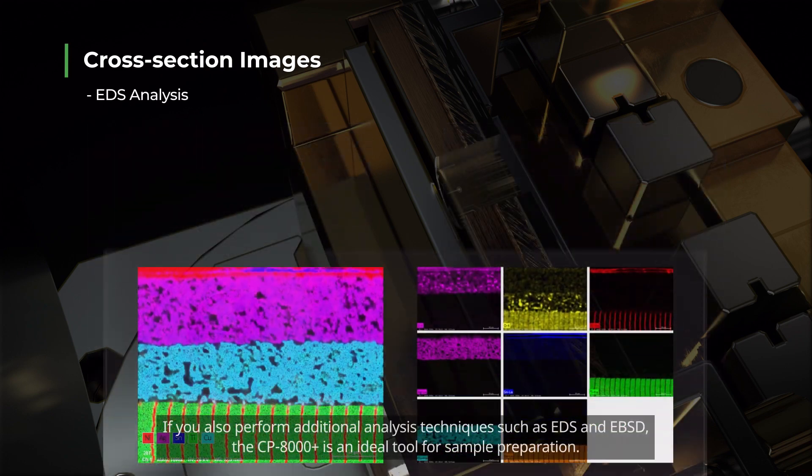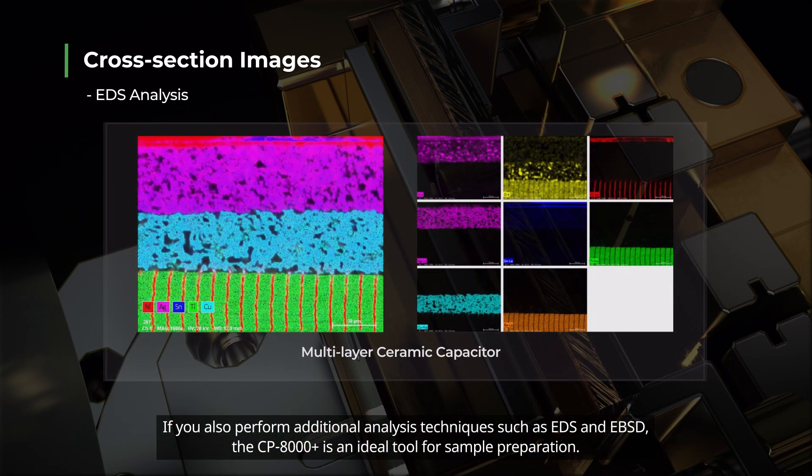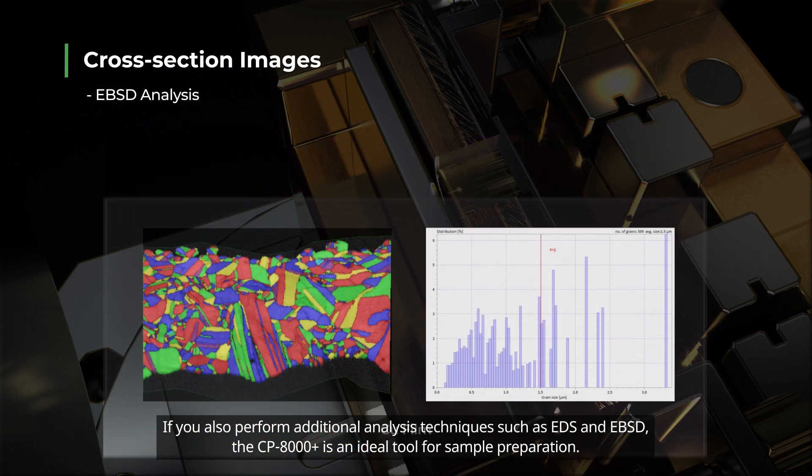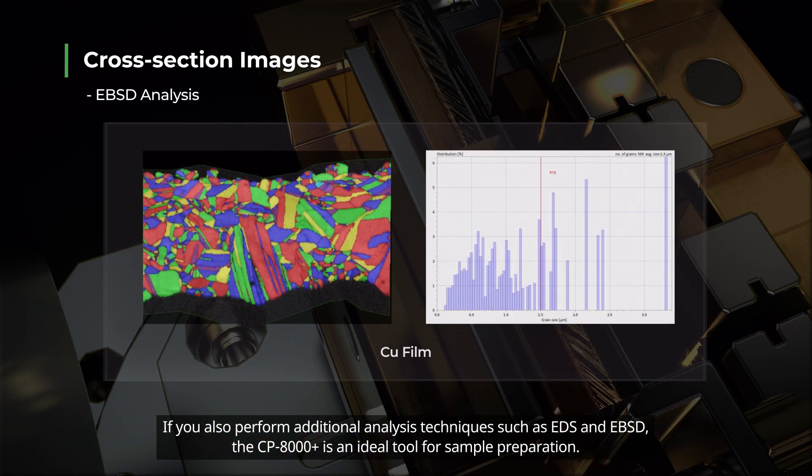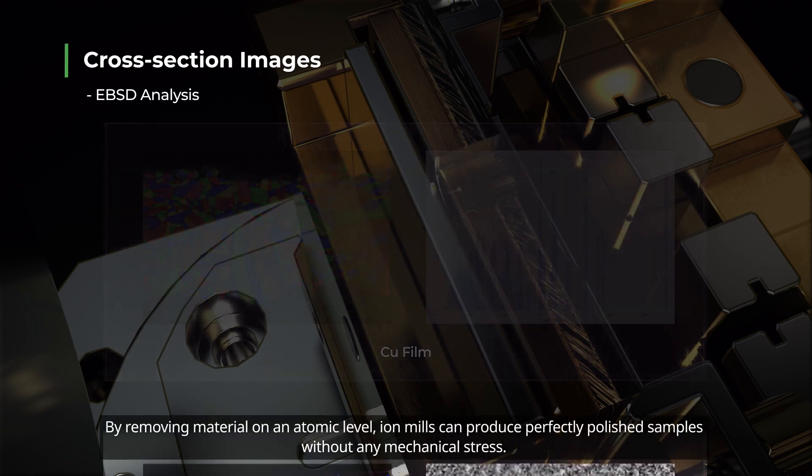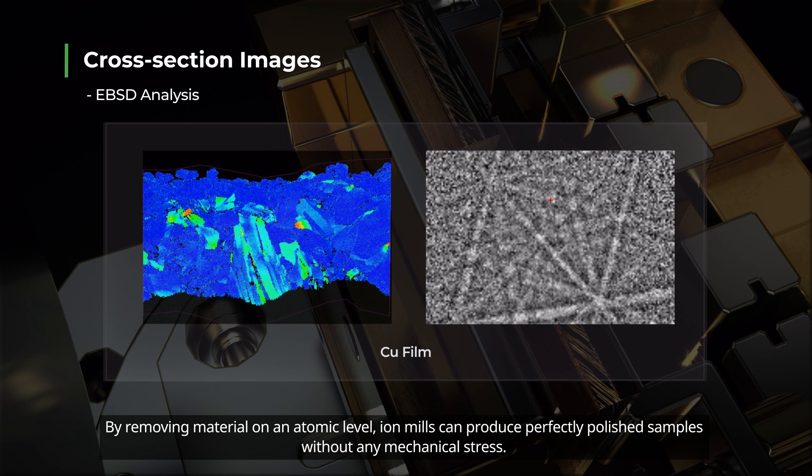If you also perform additional analysis techniques such as EDS and EBSD, the CP8000PLUS is an ideal tool for sample preparation. By removing material on an atomic level, ion mills can produce perfectly polished samples without any mechanical stress.